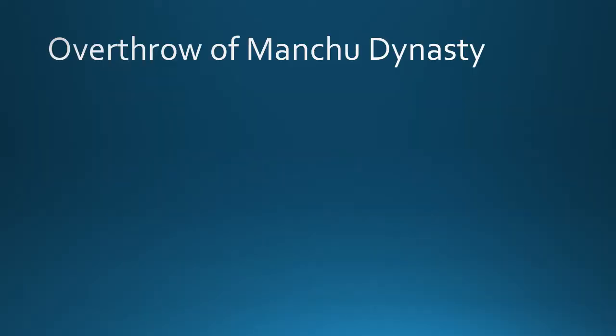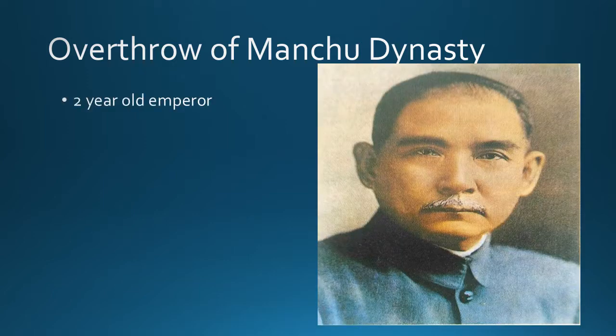Let's talk about the overthrow of the Manchu dynasty — this is more part of the long-term story rather than the Civil War itself. In 1908, things hit a very bad point for the Manchu dynasty when the emperor who takes over is two years old. This happened because the old emperor died and the next one in line happened to be two years old — one of the problems when you have monarchies where succession goes in a family line. With a two-year-old emperor in control, it's going to be his advisors making decisions, which was a big failure.